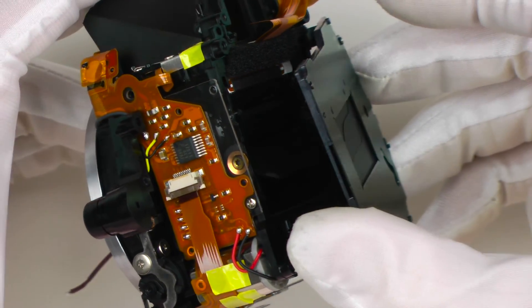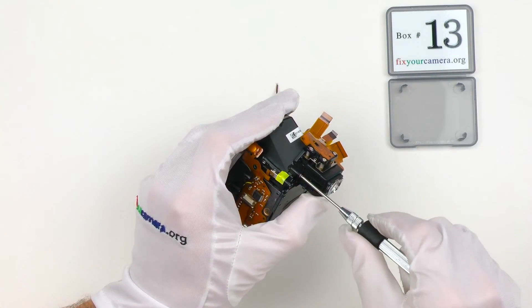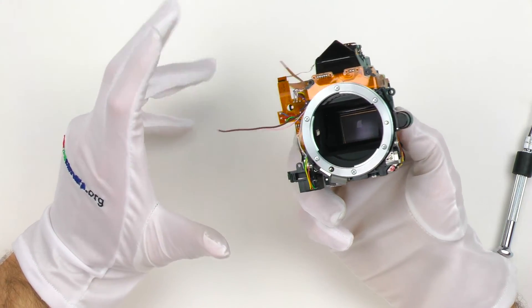Now putting back the shutter and the viewfinder. And the mirror box is complete again.